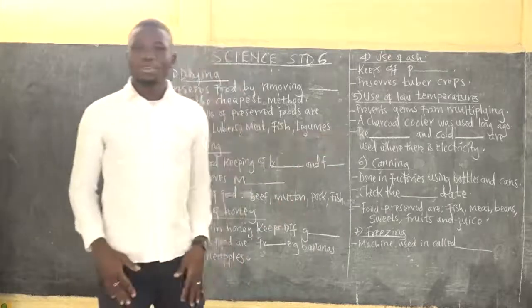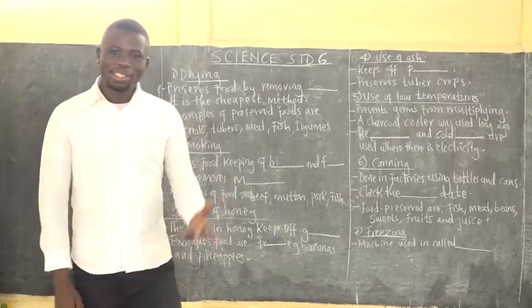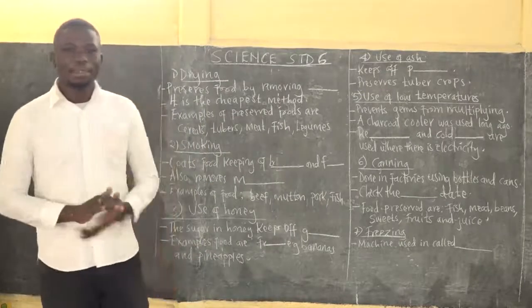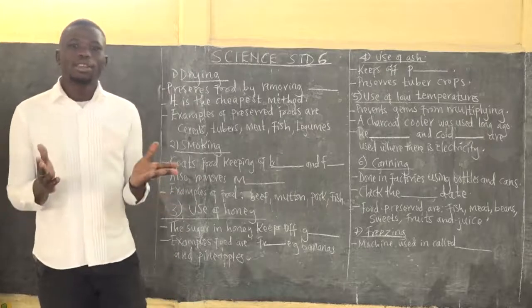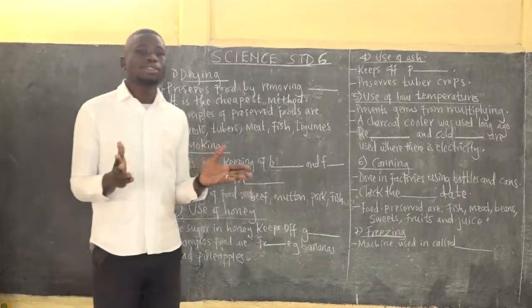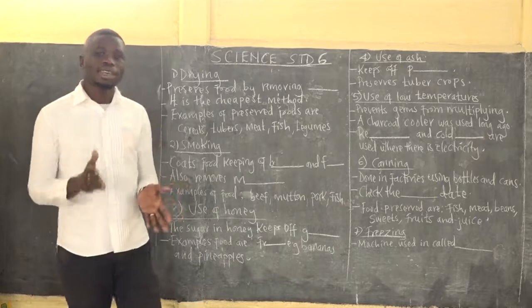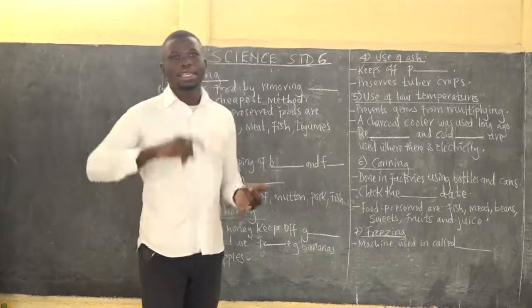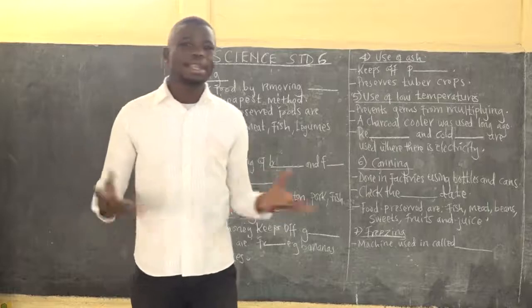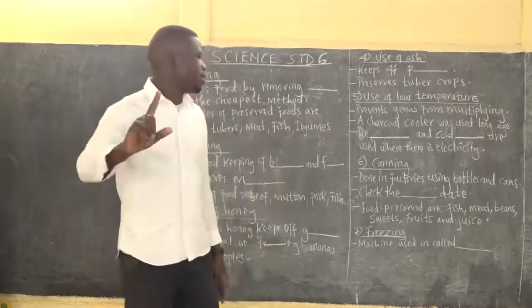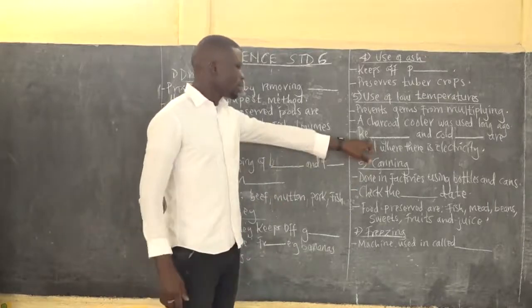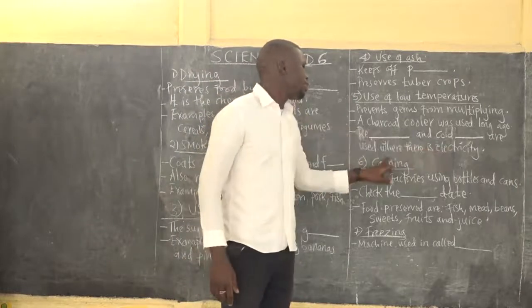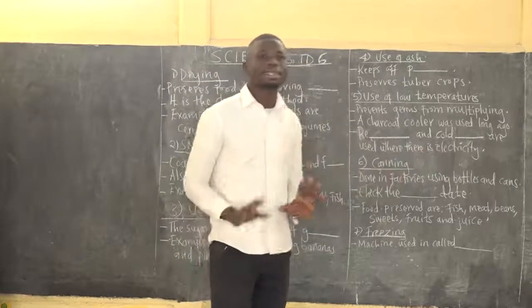Today, we use refrigerators and freezers at home as a form of low temperatures. Schools, hospitals, and other institutions use cold rooms. Refrigerators and cold rooms are used where there is electricity.